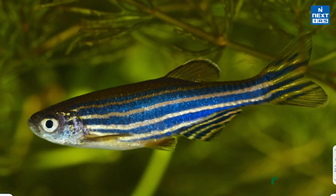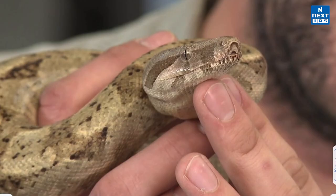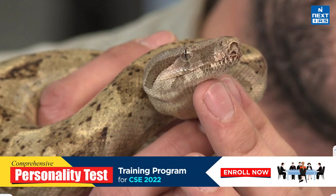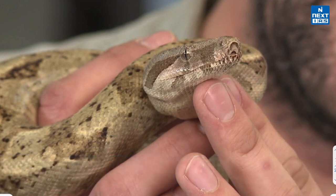Now let's learn about a new Dwarf Boa species. Recently, a new species of Dwarf Boa has been discovered in the Ecuadorian Amazon and its name honors an Ecuadorian indigenous activist. Its coloring is primarily light brown with darker brown or black blotches, similar to a Boa Constrictor.